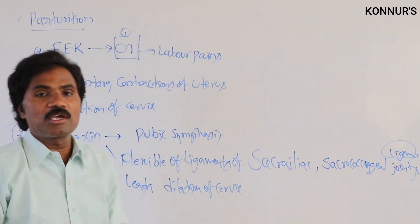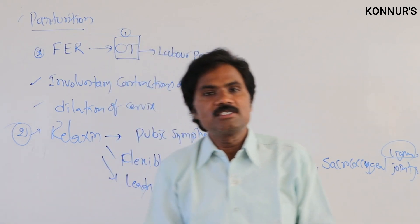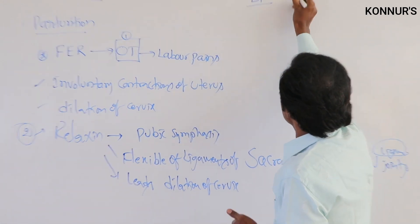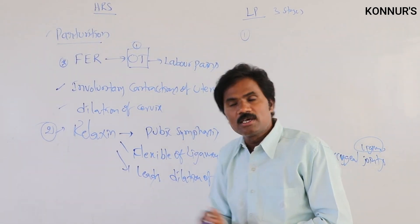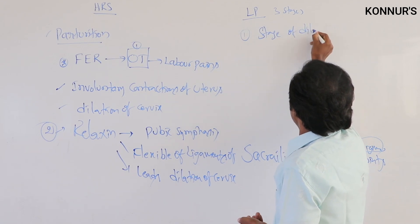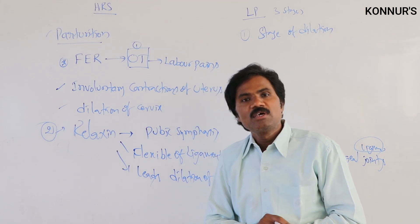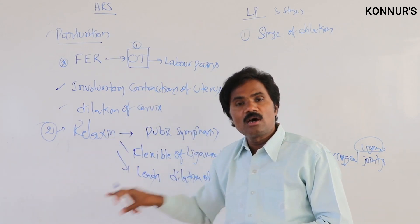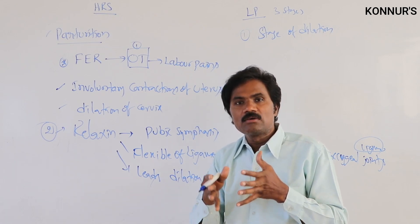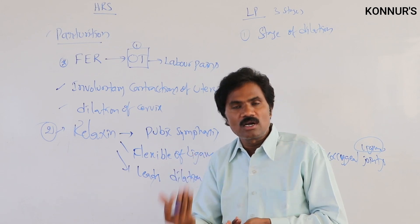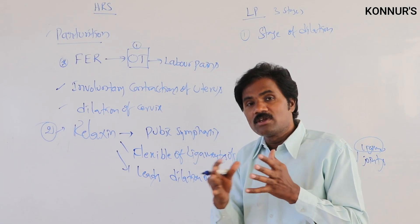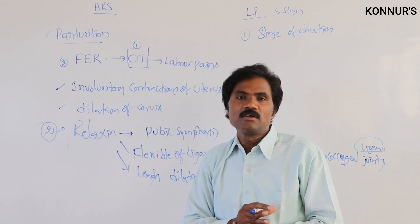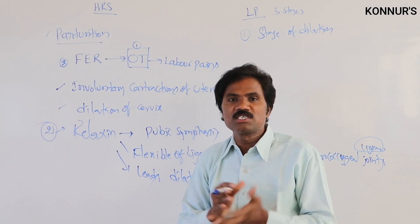In labor pains, there are three stages observed: the stage of dilation, the stage of expulsion, and the placental stage. In the first stage — the stage of dilation — because of oxytocin as well as relaxin hormones, continuous contraction of the uterus wall (labor pain) leads to dilation of the cervix.